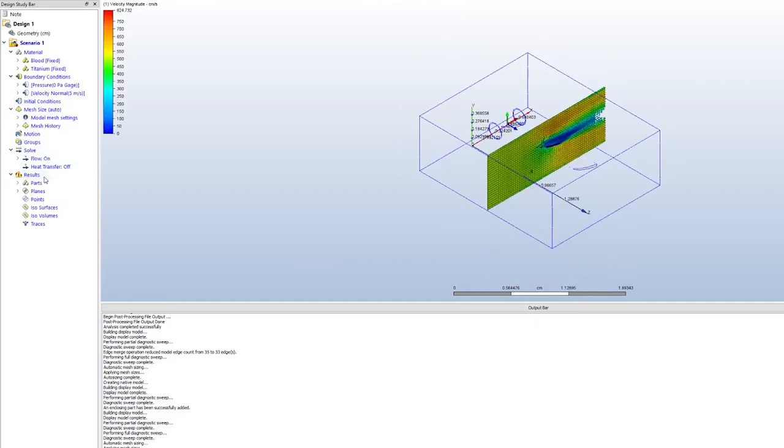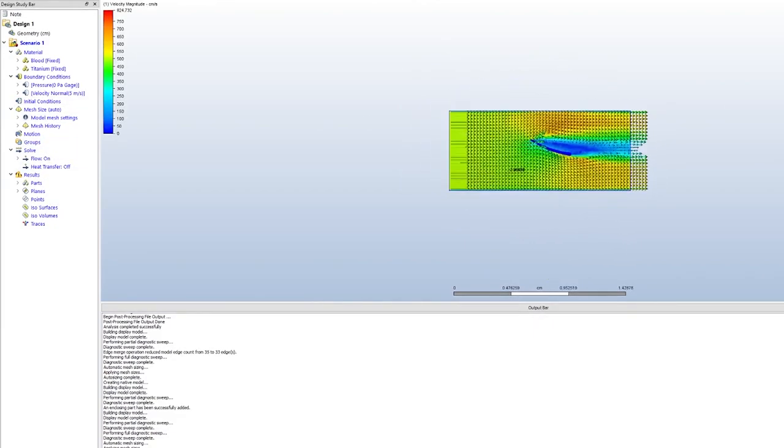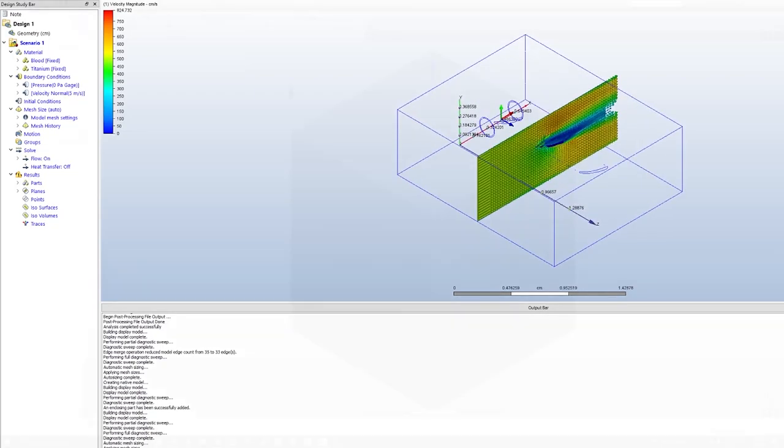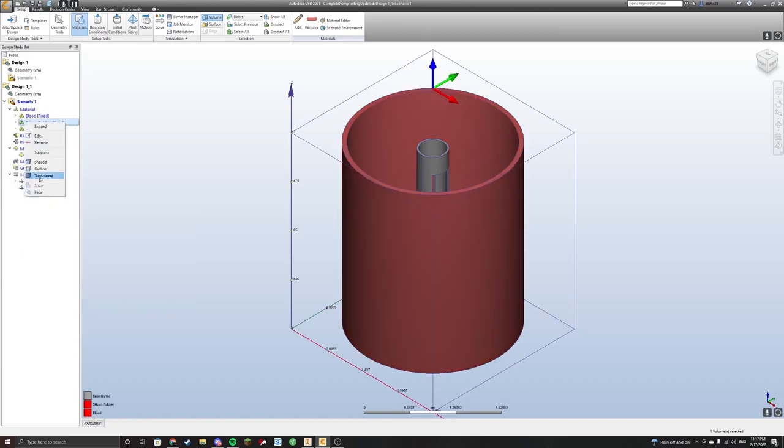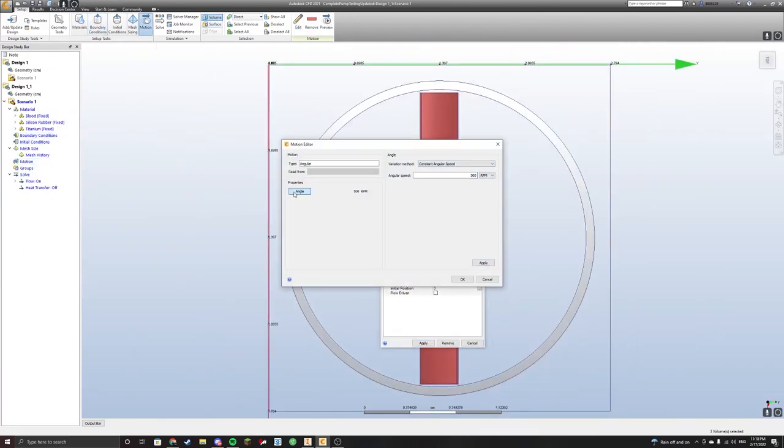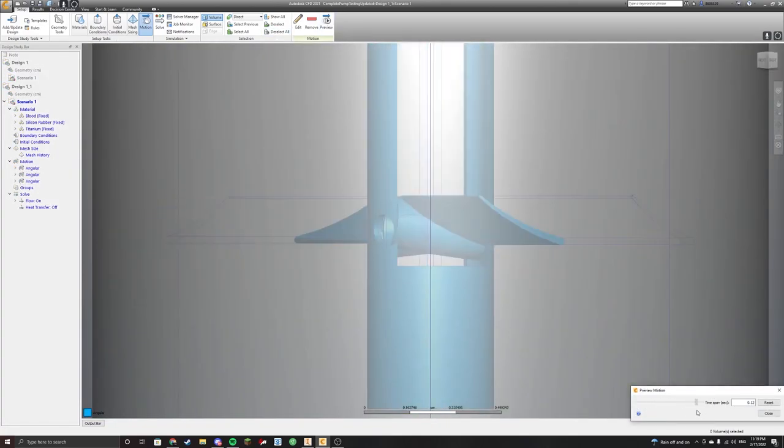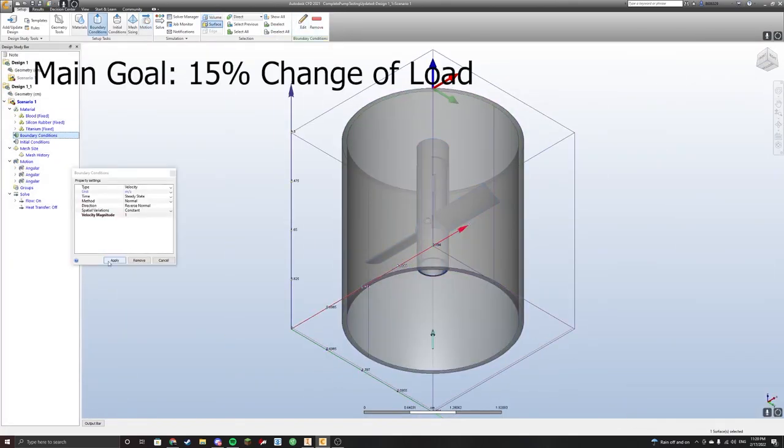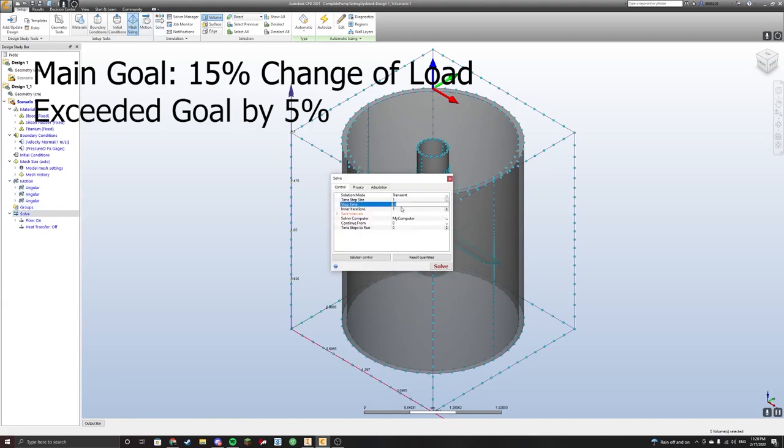I started by creating a single blade in CFD and testing different angles without any movement, but this seemed less applicable to the environment it was in during actual use. I decided to go with the extra step and create an environment with the rotating pump. This took much more time, but was much more realistic and more direct to our prototype goals. After testing, our results were transferred to a percent difference, and we exceeded our goal by five percent, with the total flow difference of twenty percent by just changing the blade angle.